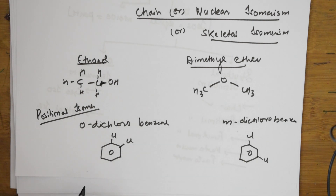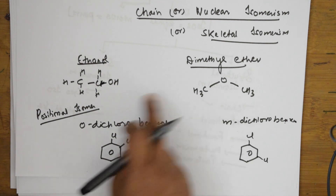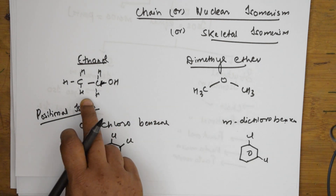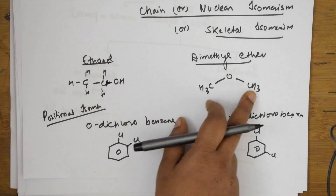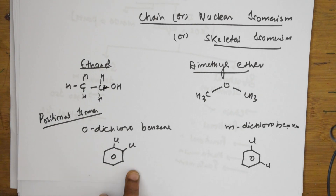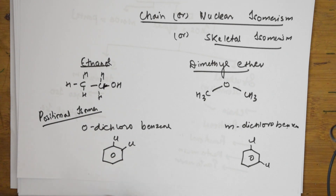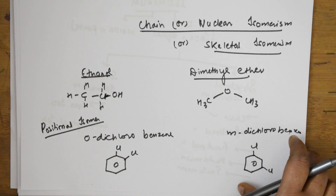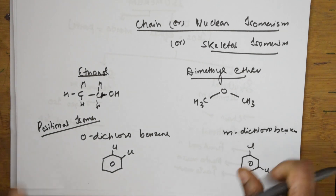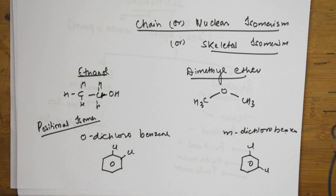So in chain isomerism, compounds differ in the structure of the carbon chain. In positional isomerism, they differ in the position of the functional group — that's where the name comes from. In the next class I'll be explaining functional isomerism very clearly. Thank you for watching.